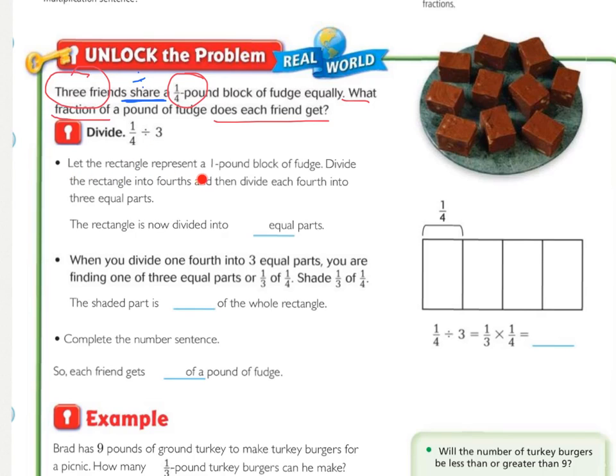So let the rectangle represent a 1 pound block of fudge. So that's this rectangle right here, the whole thing. Divide the rectangle into 4ths, which they did. There's 1, 2, 3, 4. Then divide each 4th into 3 equal parts. So I'll press pause and divide each 4th into 3 parts. Okay, so there we go. I added those lines. Now there's 3 parts within each of those 4ths.